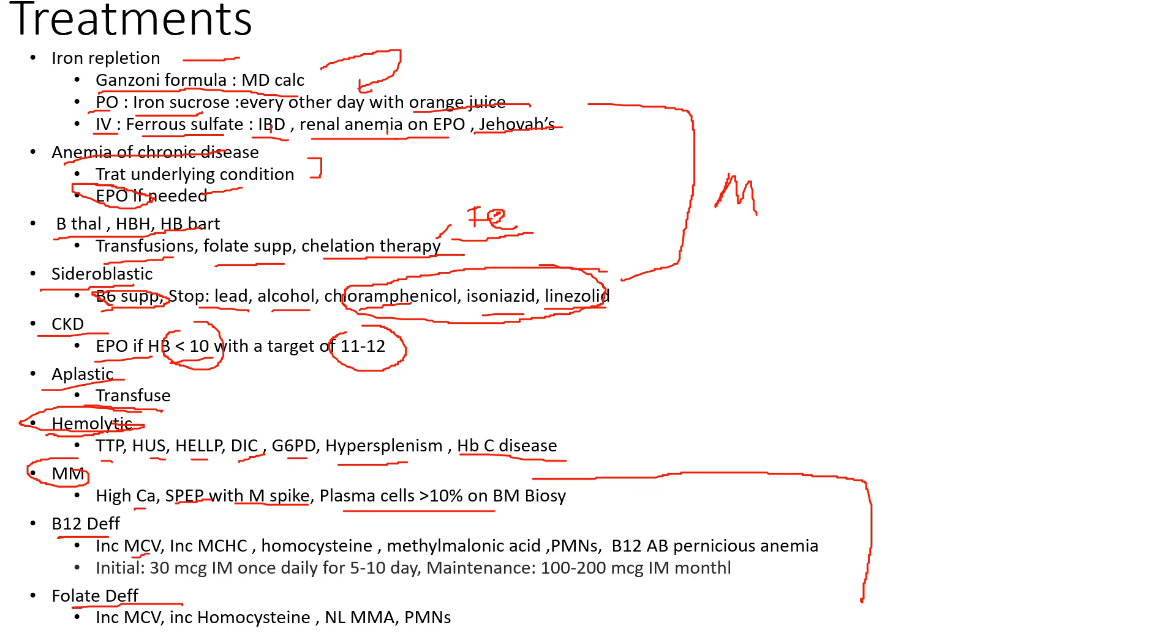Remember methylmalonic acid is going to be your differentiator. Homocysteine you can also test for—it's going to be high in both—but methylmalonic acid will help you differentiate. And in B12 you want to look out for pernicious anemia antibodies, and that's why in these cases it's better to supplement IM. Usually you'll start with 30 micrograms IM daily and then you'll have maintenance doses monthly. So start with IM supplementation for B12 deficiency.